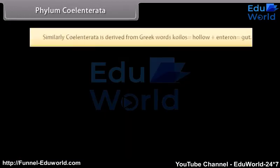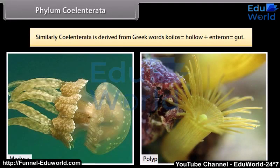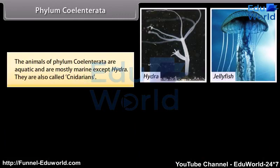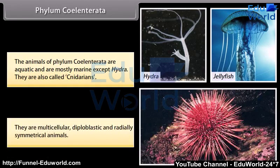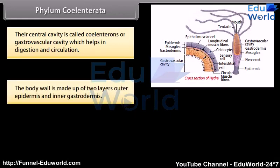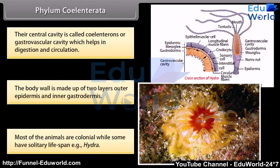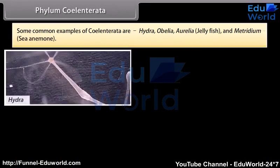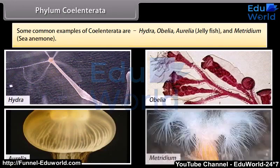Phylum Coelentrata. Coelentrata is derived from Greek words koilos, meaning hollow, plus enteron, meaning gut. The animals of Phylum Coelentrata are aquatic and mostly marine, except Hydra. They are also called cnidarians. They are multicellular, diploblastic, and radially symmetrical animals. Their central cavity is called the coelenteron or gastrovascular cavity, which helps in digestion and circulation. The body wall is made up of two layers: outer epidermis and inner gastrodermis. Most animals are colonial, while some have solitary lifespan, e.g. Hydra. Some common examples are Hydra, Obelia, Aurelia, jellyfish, and Metridium (sea anemone).